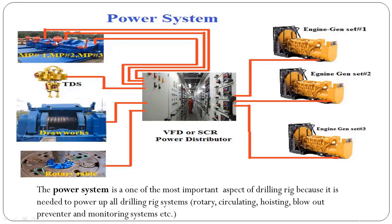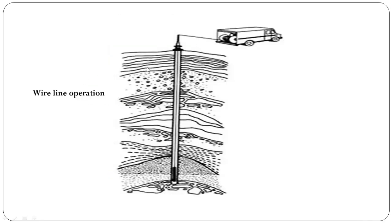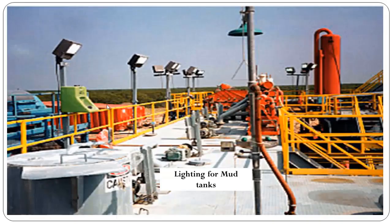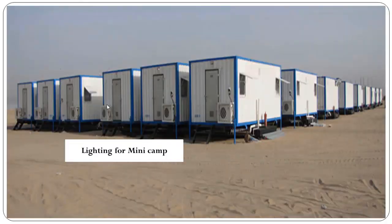Whereas minimum power will be required when the mud pump, TDS, draw works, and rotary table will be in standby mode, and it will happen only when we go for wireline operation. In that case, we will need minimum electric power — only for lighting on the mast, derrick, rig floor, mud system, and power for the minicamp as well.